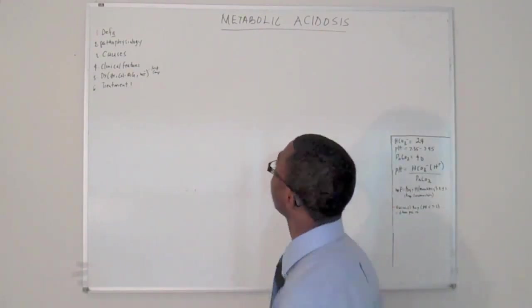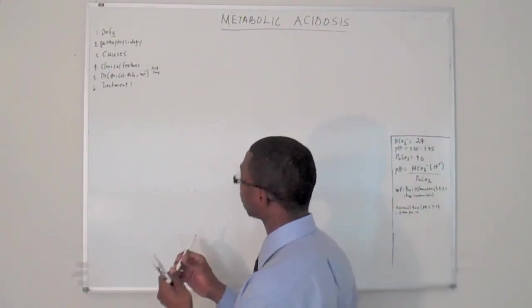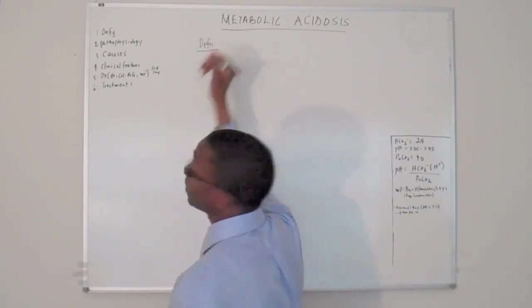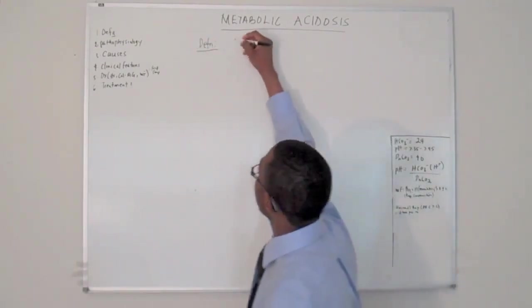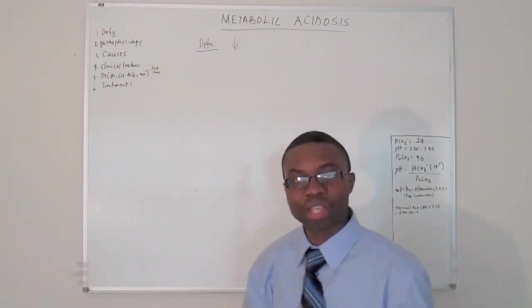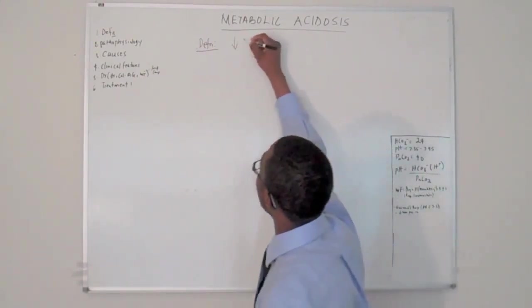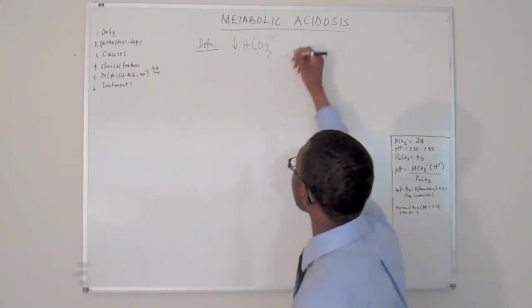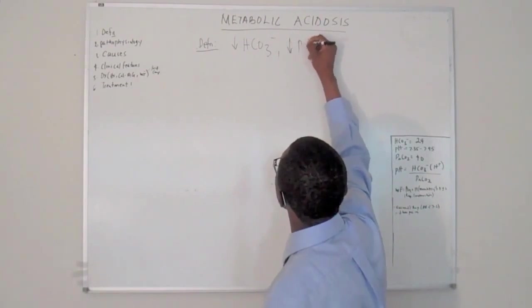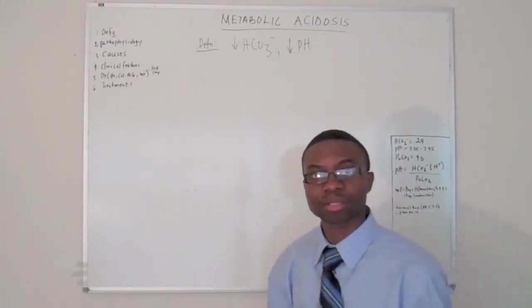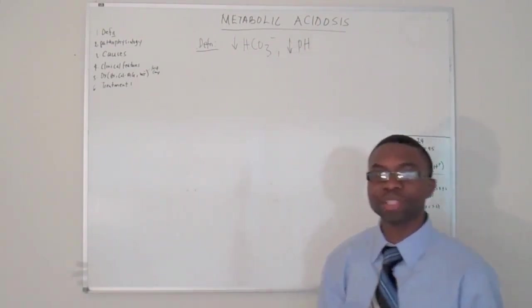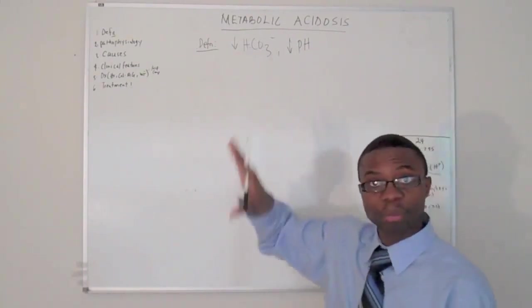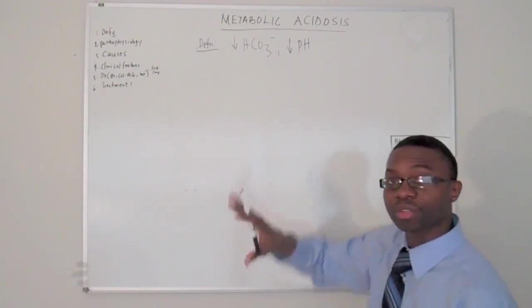So definition. What's the definition of metabolic acidosis? The definition basically is any change physiologically in your body that causes your bicarb to be decreased, causing a decrease in your pH in your blood. That's just a simple definition. So anything that makes your bicarbonate in your blood, which is supposed to be a buffer, and makes your blood pH to decrease.